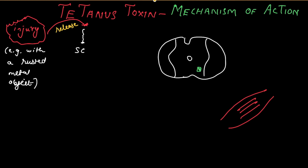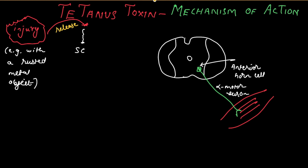Emerging from the anterior horn cell — the anterior horn cell, because it lies in the anterior horn of the spinal cord — is the alpha motor neuron. This alpha motor neuron innervates the skeletal muscle and causes it to contract.